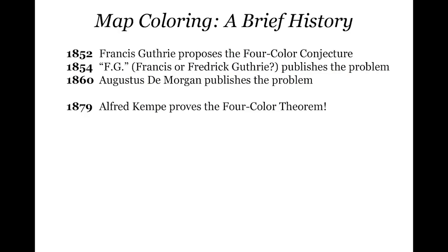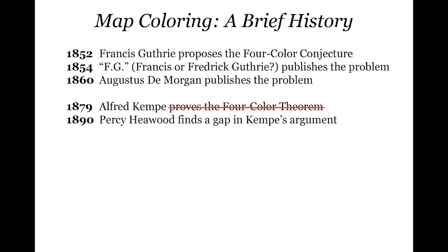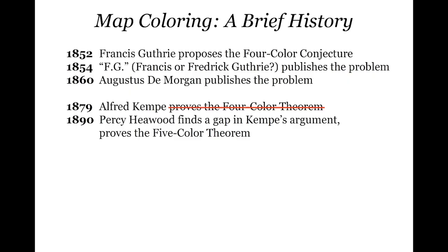This is one of my favorite examples from math history of the challenge of determining that something's been proven, because it took 11 full years for anyone to realize that Kemp's proof didn't work. It's a shame because it's a really nice proof with some very clever ideas — they just happen to break down in important cases. In 1890, Percy Haywood published a paper saying the Kemp proof doesn't actually work, and he wasn't able to fix it either. But what he did manage was proving the five color theorem.